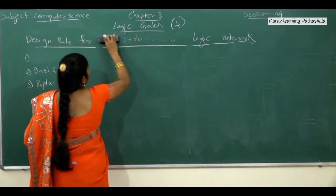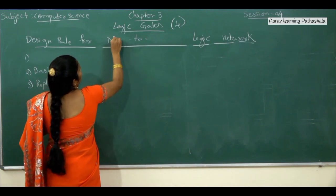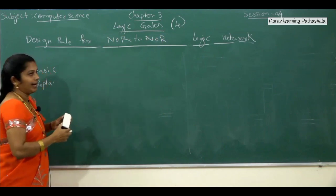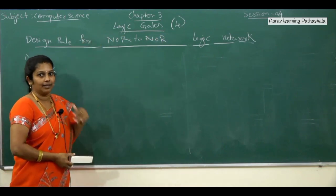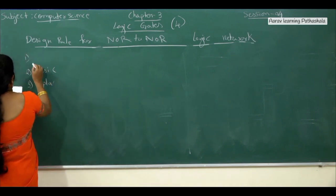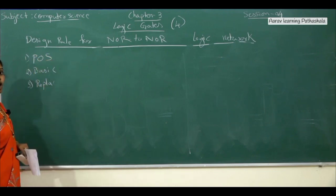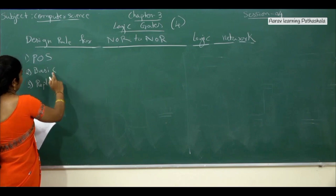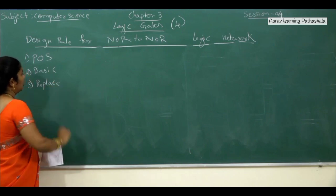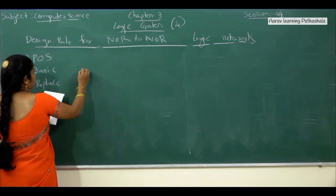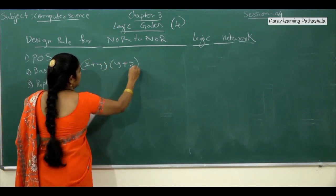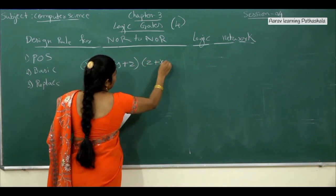For NOR-to-NOR, if the question asks to write the circuit diagram using only NOR symbols, we follow similar rules. The first step is the expression has to be in product of sum format. Then write the expression using basic gates. Then replace all basic gates with NOR symbols. Let us explain with an example.